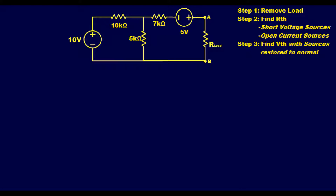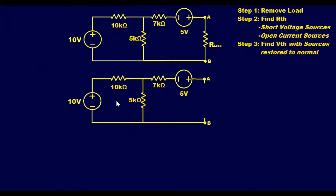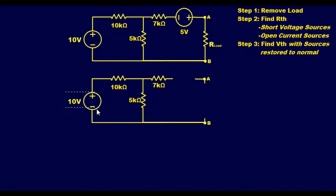This next example is slightly trickier. Step one: remove the load — just like last time the circuit is pre-made with the load removed so points A and B are now open. Step two: find R_thevenin. We short our voltage sources and open our current sources. Just like last time, we remove both voltage sources and create a short.